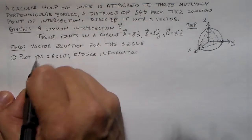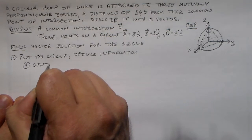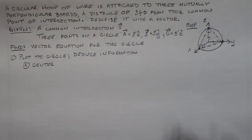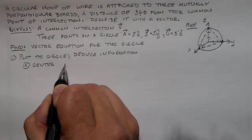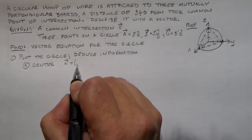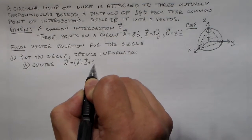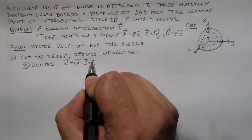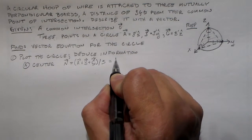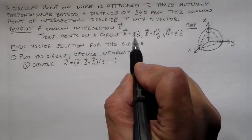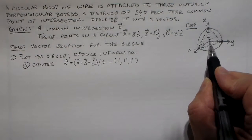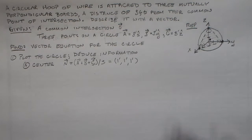So what's the first thing we want to deduce? The center. The center is easy to find if you have something like this — three equidistant points on a circle. The center is going to be the average of those things. So the center of the circle, which I'll call capital N, is equal to A plus B plus C over three. So A plus B plus C over three is one foot, one foot, one foot. That's the center right there. So our center is (1, 1, 1).